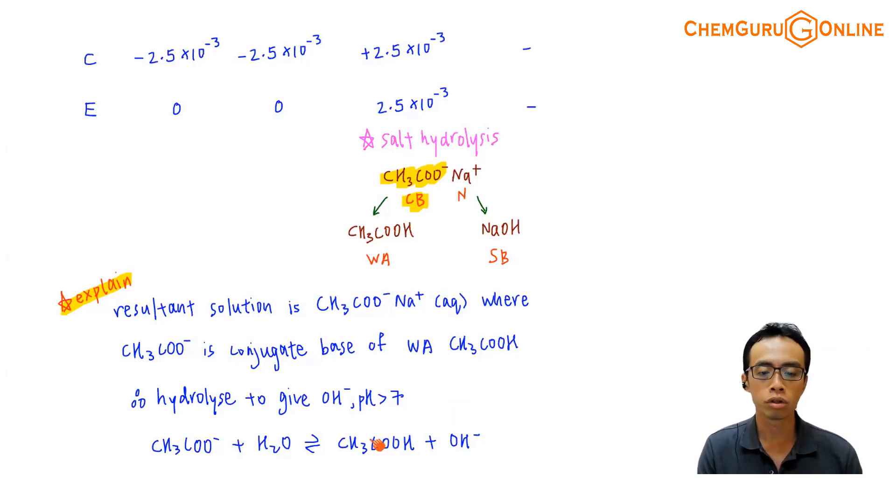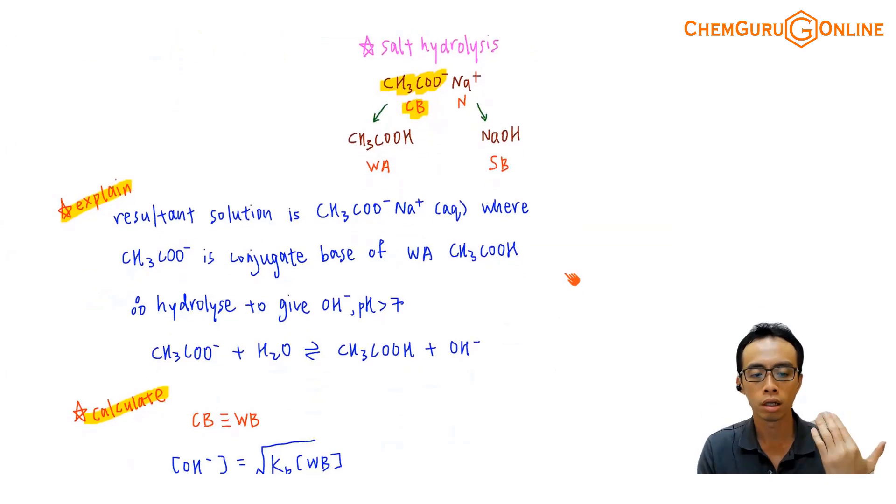If I want to write out an equation to show the dissociation, remember, my conjugate base is just a weak base. This would be a partial dissociation. So if you keep this in mind, the equivalence point for this acid-base reaction is nothing more than the salt, nothing more than the conjugate base, nothing more than the weak base.